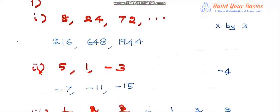Question number one, second subdivision: 5, 1, minus 3. Three terms are given. Now 1 is 5 minus 4, minus 3 is 1 minus 4, so each term is got by subtracting 4 from the previous term.